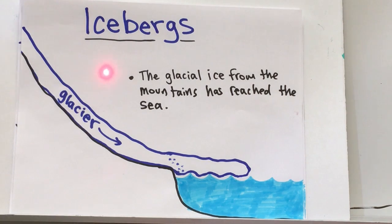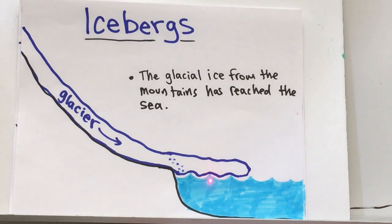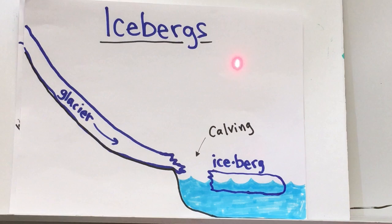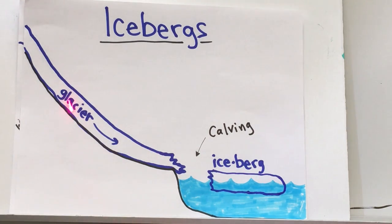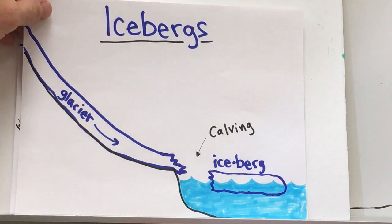Icebergs. The glacial ice from the mountains has reached the sea. The glacier is coming downhill, reaching sea level, and then extending over into the ocean. The glacier will start to sink and you'll get some cracks. When the glacier actually cracks and breaks off, that's called calving. The iceberg is now created from the front of the glacier. It will float away and the glacier may continue to grow and push new pieces of ice into the ocean.